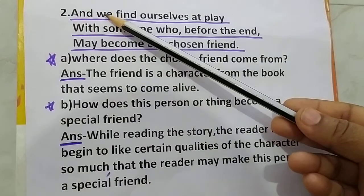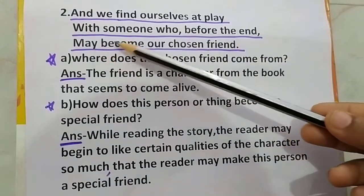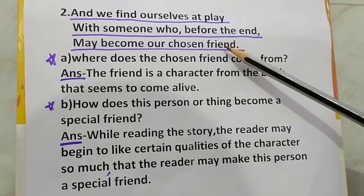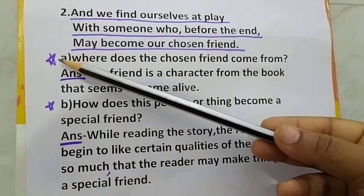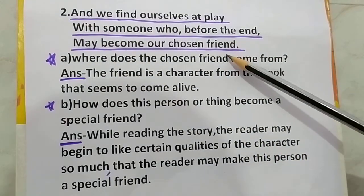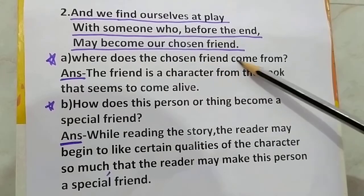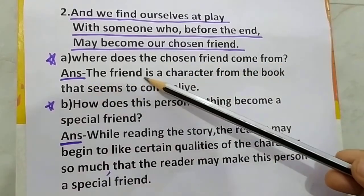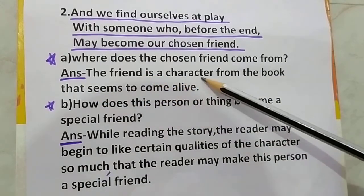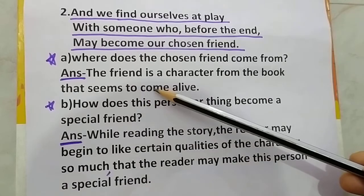Second question. The lines are: 'And we find ourselves at play with someone who before the end may become our chosen friend.' Question A: where does the chosen friend come from? The friend is a character from the book that seems to come alive.